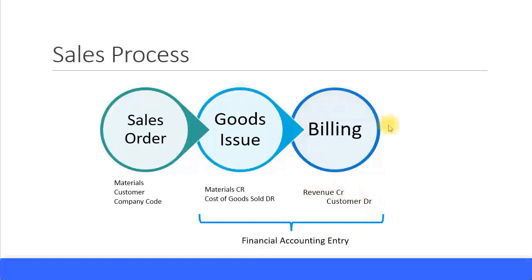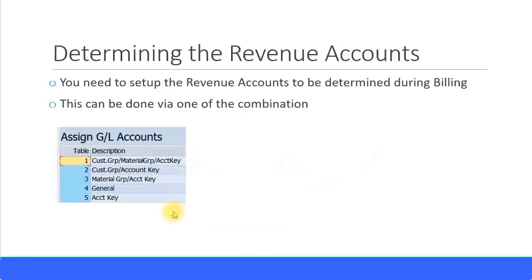Upon the billing process we would need to see the financial entry happening. At that time we will have the revenue account credited and the customer account debited. The customer account will be derived from the sales order and the revenue account will be derived using the account determination settings.